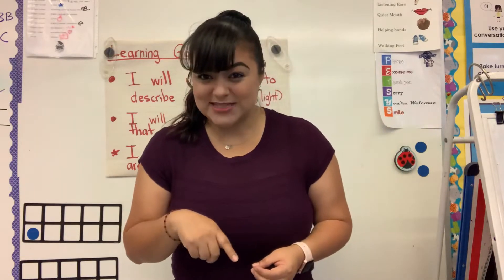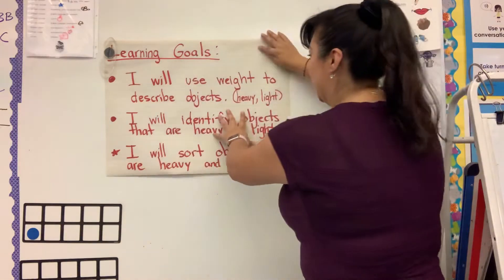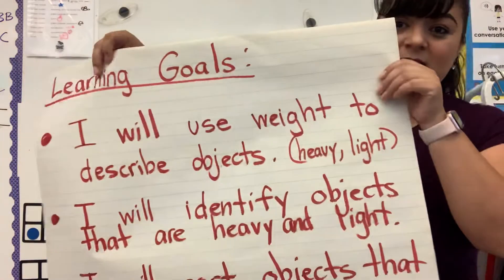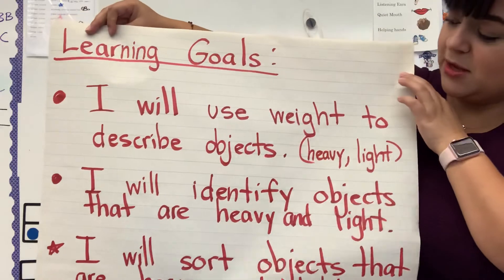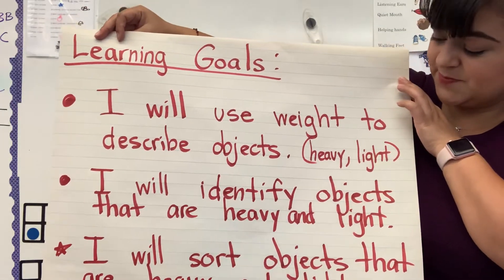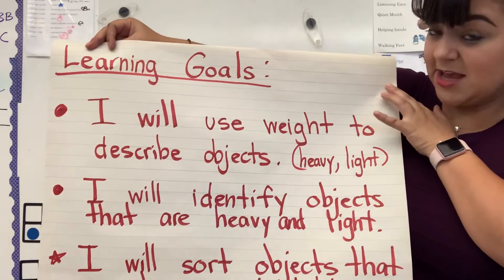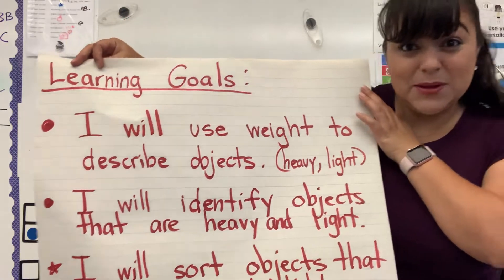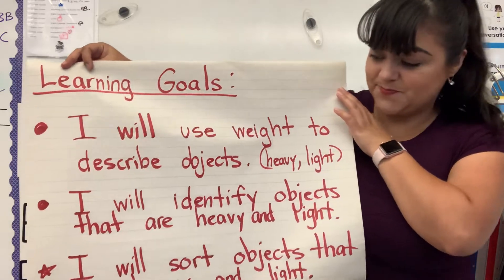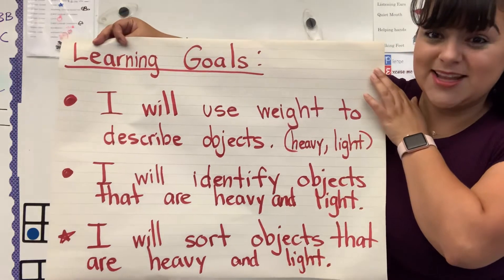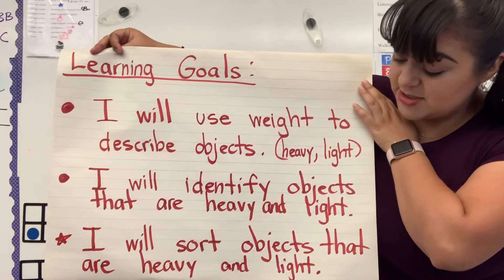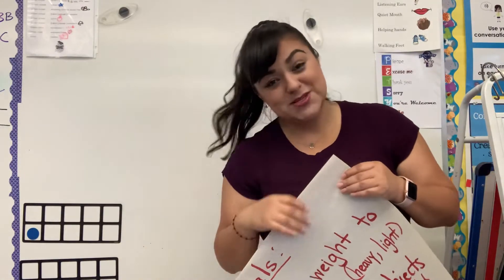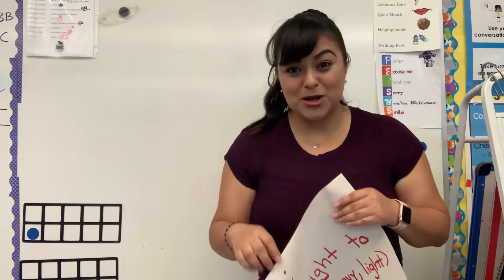So what are we gonna be learning about today? Weight. Let's go over our learning goal. Here's our first learning goal: I will use weight to describe objects — describing them as heavy or light. I will identify objects that are heavy and light. And last, I will sort objects that are heavy and light. That's your home learning today — you're going to be charting and sorting which objects in your home are heavy and which are light.